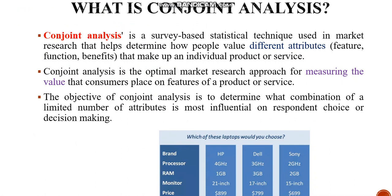In simple words, conjoint analysis presents a certain combination of features to the user or customer, and he or she will give ratings on a scale of 1 to 10 or even a 100-point scale. The objective of conjoint analysis is to determine which combination of attributes is most influential on respondents.